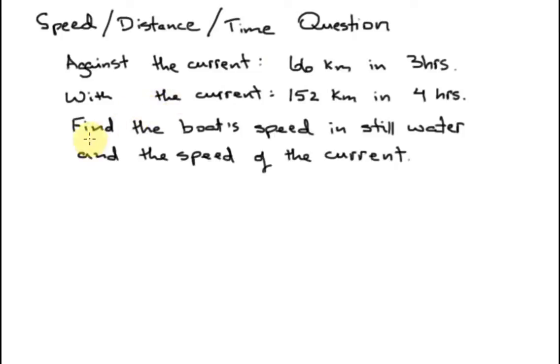So here's what we have. We're riding in a boat and it tells us that when we go against the current we can do 66 kilometers in three hours. And then if we were traveling with the current we could do 152 kilometers in four hours. Our job now is to find the boat's speed in still water, that is with no current, and also what is the speed of the current.